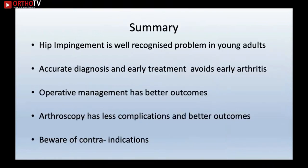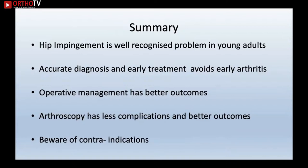In summary, hip impingement is a well-recognised problem in young adults and is increasingly seen in regular practice and FRCS exams. Early and accurate diagnosis allows efficient treatment and avoids early arthritis. Operative management has better long-term outcomes; the arthroscopic approach is superior with fewer complications compared to open surgery. Be aware of contraindications.